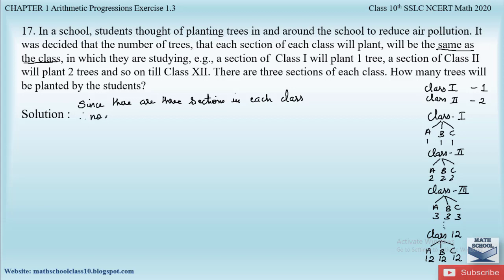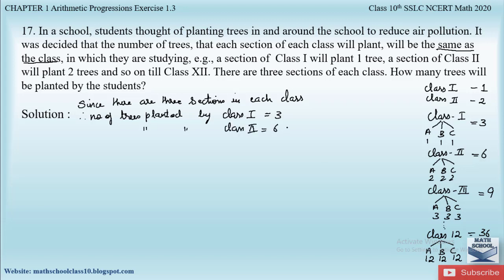Since there are three sections in each class, the number of trees planted by class 1 is 1+1+1 = 3. In class 2 it is 2+2+2 = 6. In class 3 it is 3+3+3 = 9 trees. In class 12 it is 12+12+12 = 36 trees. Therefore let us write down the AP. In class 12, 36 trees will be planted.